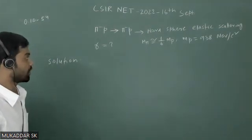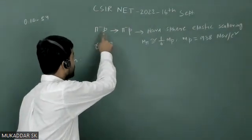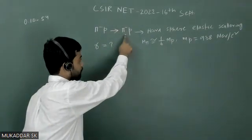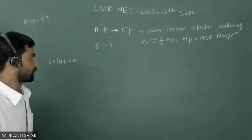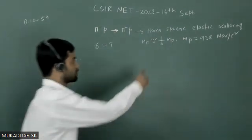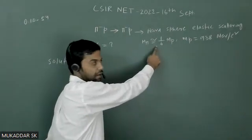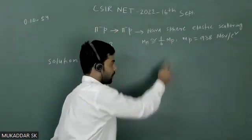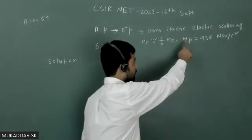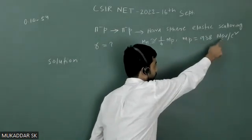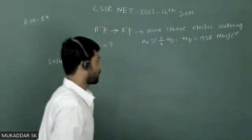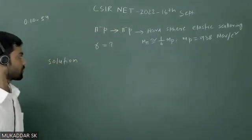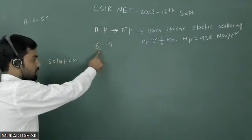In that question, there is a hadron scattering process given: π⁻ + p goes to π⁻ + p. Also given that the mass of pi mesons is 1/6 times the mass of proton, and the mass of proton is 938 MeV/c². So they ask what will be the total scattering cross section.